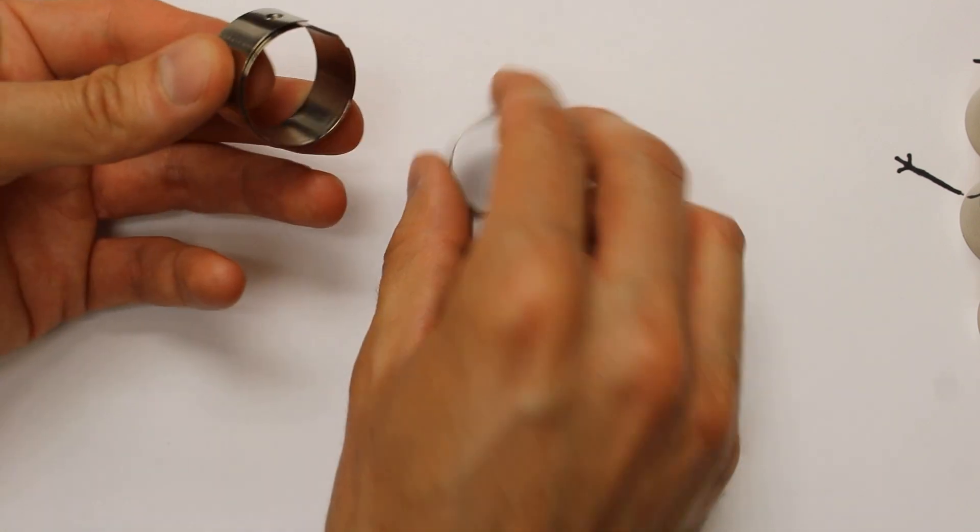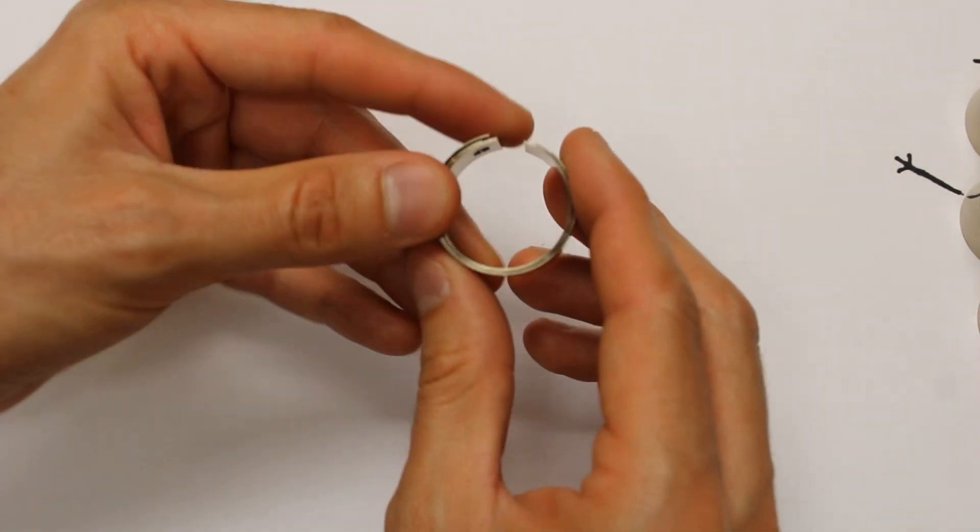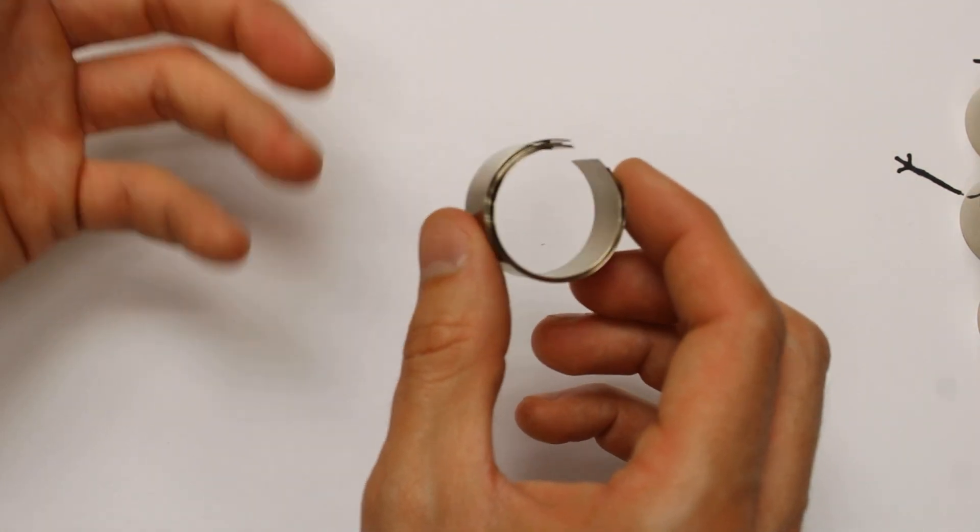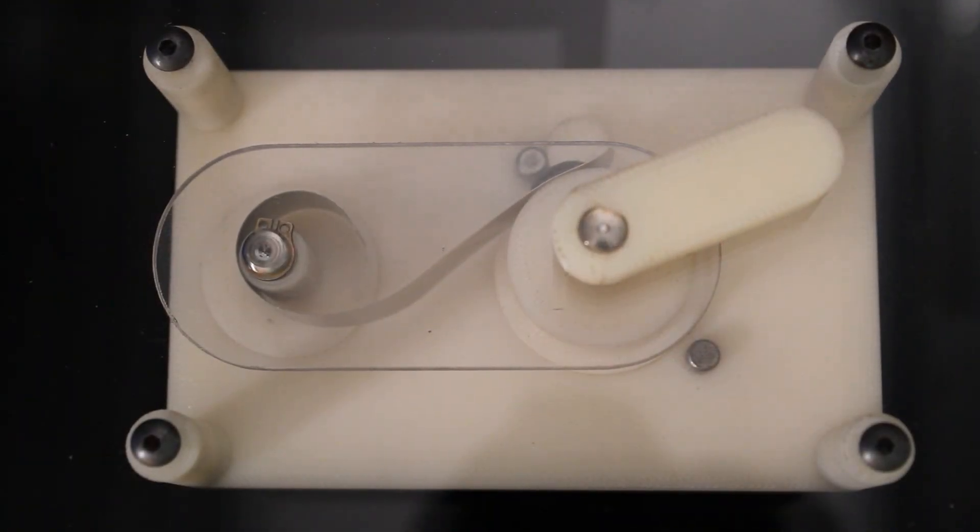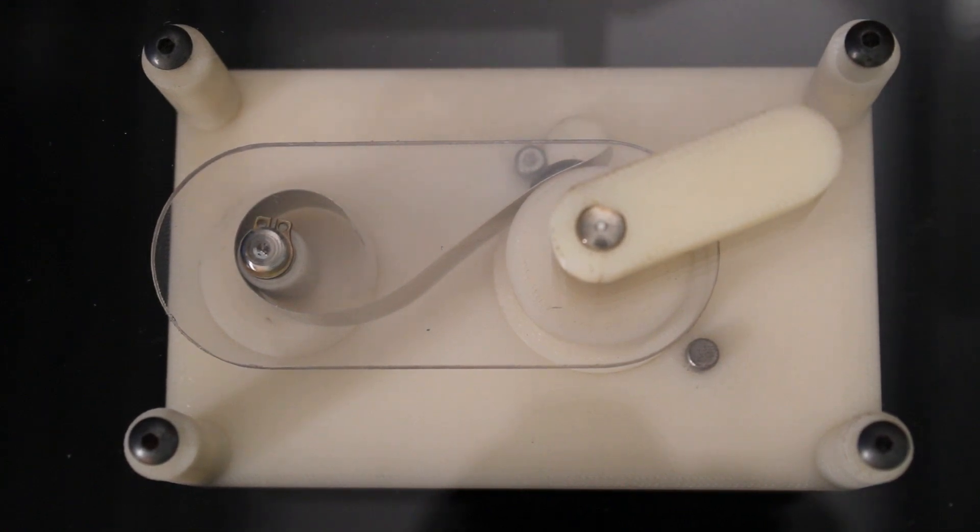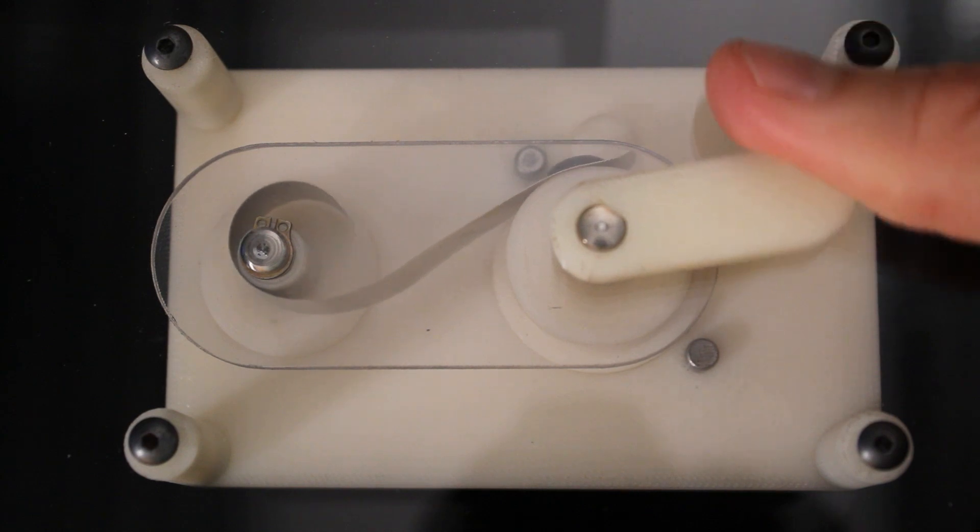Hinge springs work by mounting the set of laminations onto two drums, like this. When mounted on the properly sized drums, they exert a precise amount of torque on this drum, the output drum, when deflected around it, like this.